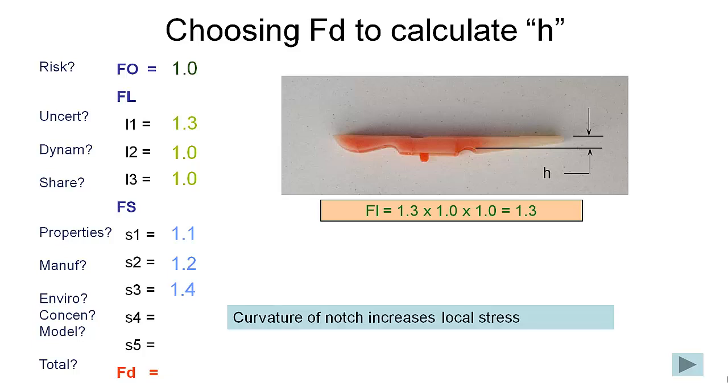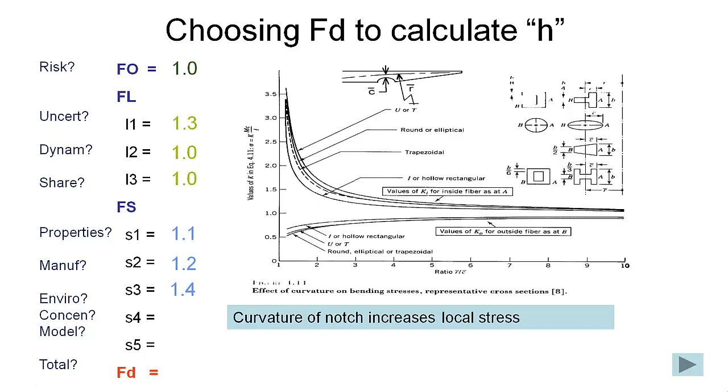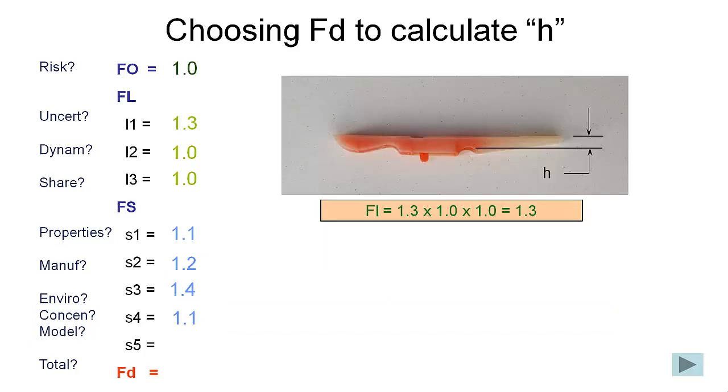In terms of any concentrations, then if we look at it here, then we do have a concentration of stresses due to this curvature of our notch. And we can actually look up some tables. And this is something that you'll do in future subjects to see what the effect of having a notch like this might be on our stress concentration. And we can read off a K value. And so we can put in a 1.1 to account for that stress concentration.